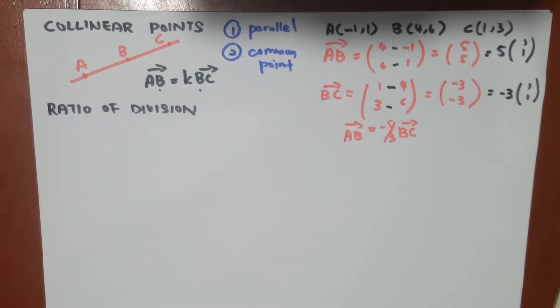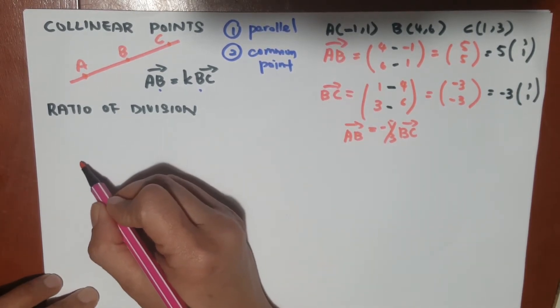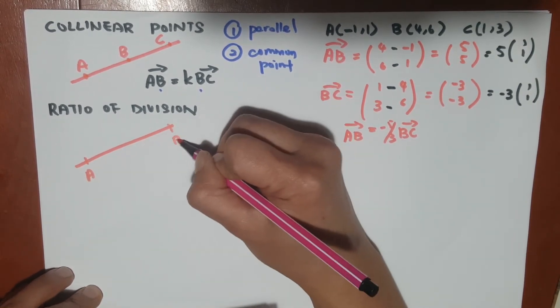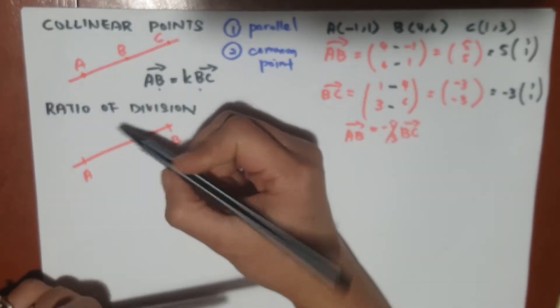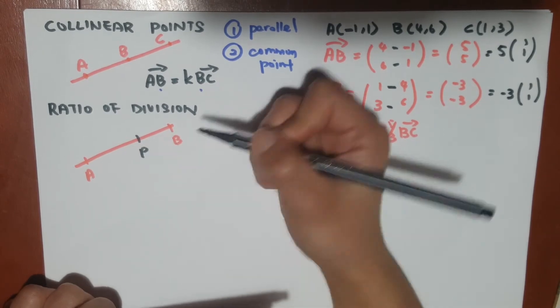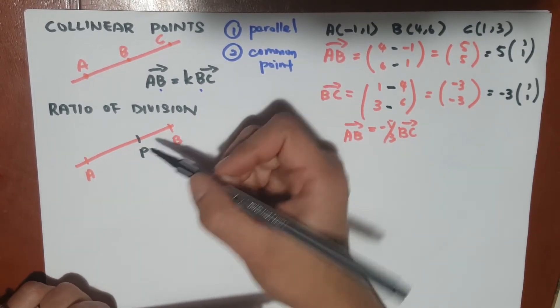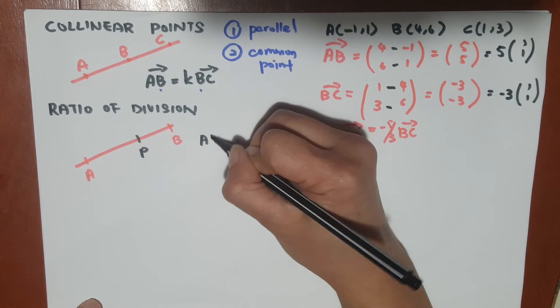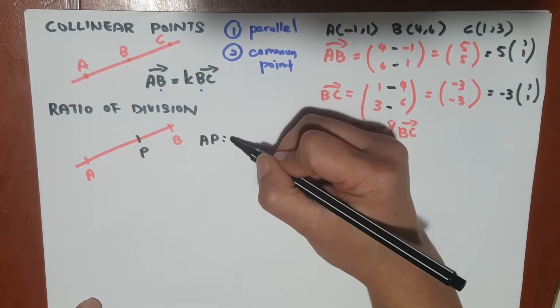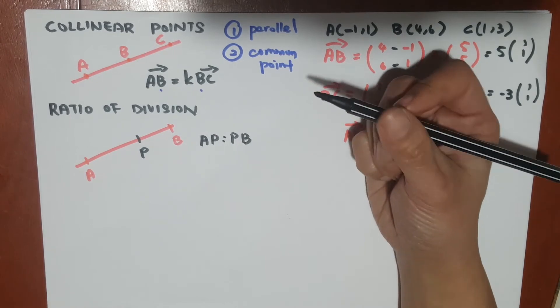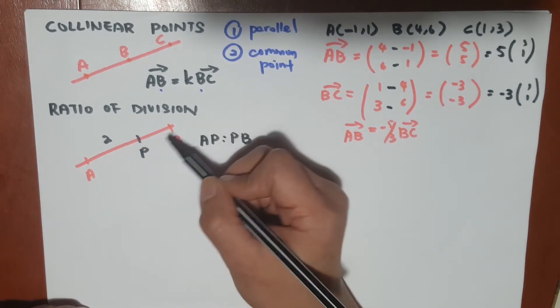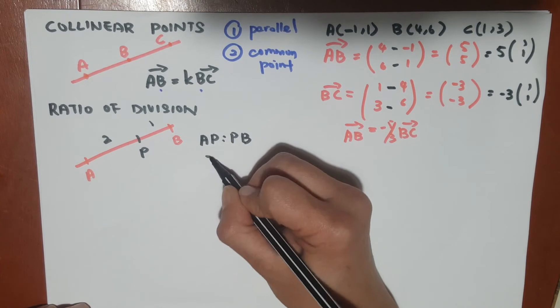The second thing we are learning is the ratio of division. It means that the points are also collinear. Let's say we have A and B, and we have a point P, which is sitting somewhere here. It means that P is actually dividing the vectors of AB into a certain ratio, and we could write this as AP:PB.